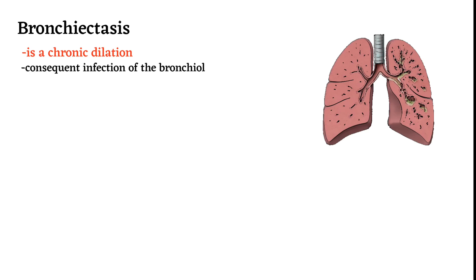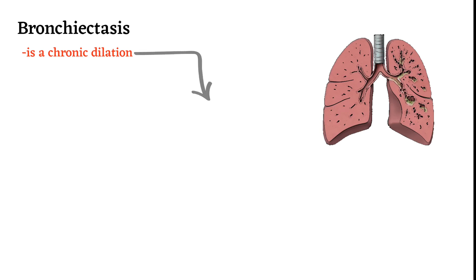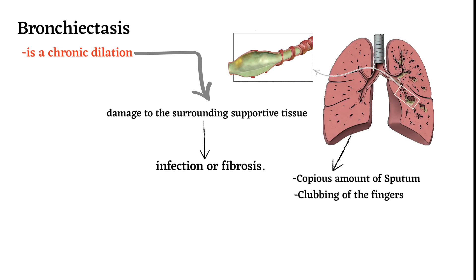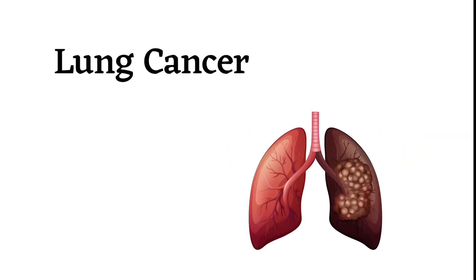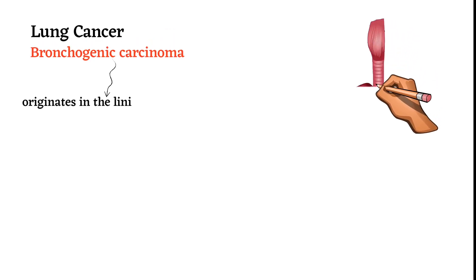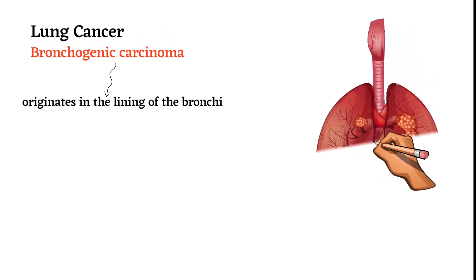The mycobacterium should be microscopically visible in the patient's sputum. Third, bronchiectasis: bronchiectasis is a chronic dilation and consequent infection of bronchioles and bronchi that results from obstruction in the bronchi. The dilation results from damage to the surrounding supportive tissue and is usually a result of infection or fibrosis. It may be associated with copious amounts of sputum and clubbing of the fingers.